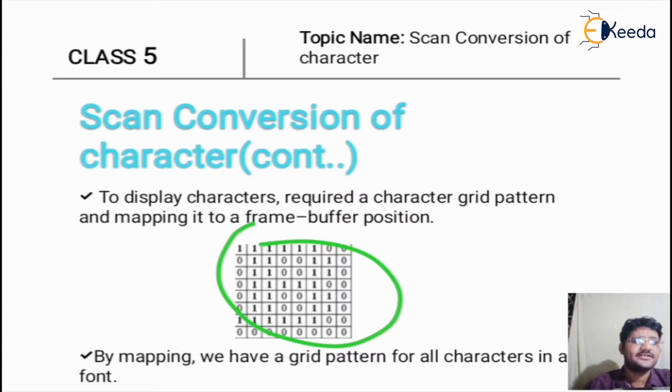Pixel values are in the form of 0 and 1. By mapping, we have a grid pattern for all characters in a font.